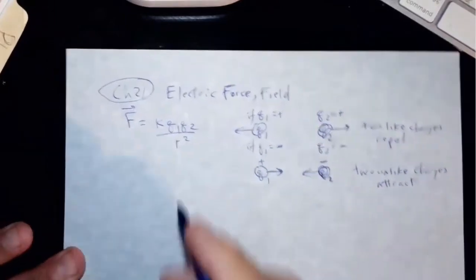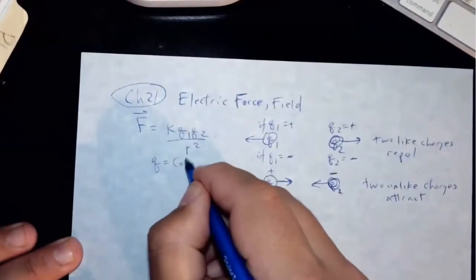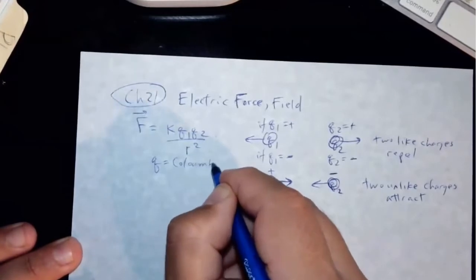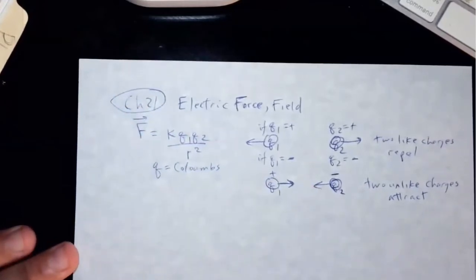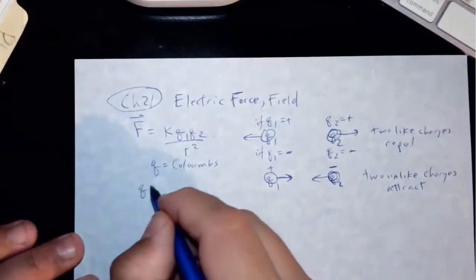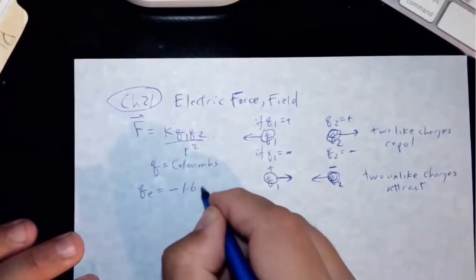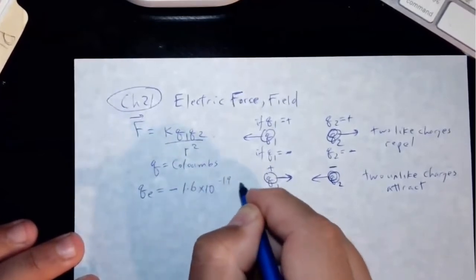And then the Q is in units of Coulombs. And to give you an idea, the Coulomb is actually a pretty large unit. So the charge of the electron is negative 1.6 times 10 to the minus 19 Coulombs.